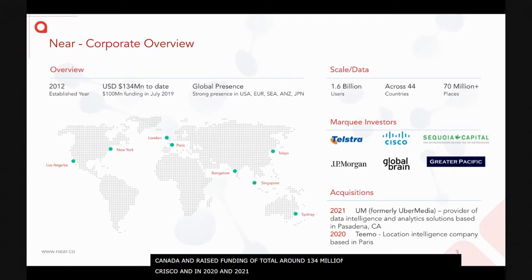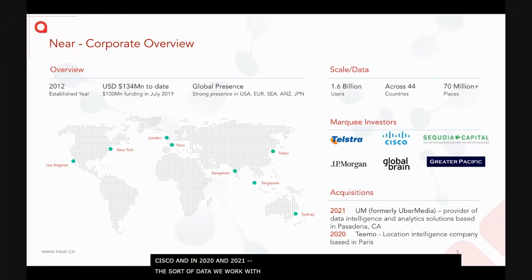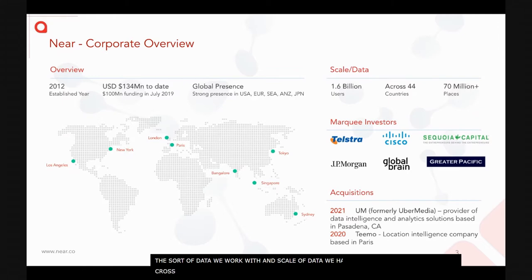In 2020 and 2021, to increase our footprint in the US and Europe, we acquired two major companies in location intelligence: Uber Media and NTO. We work with data at a scale of around 1.6 billion users from across 44 countries and 70 million places in our database.